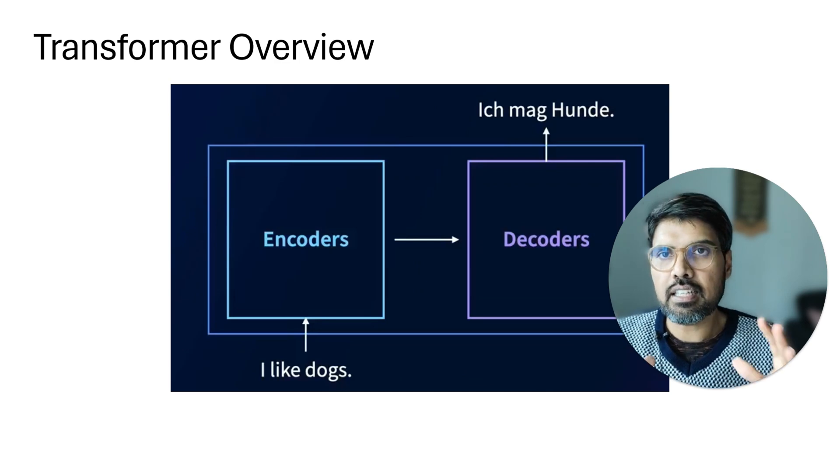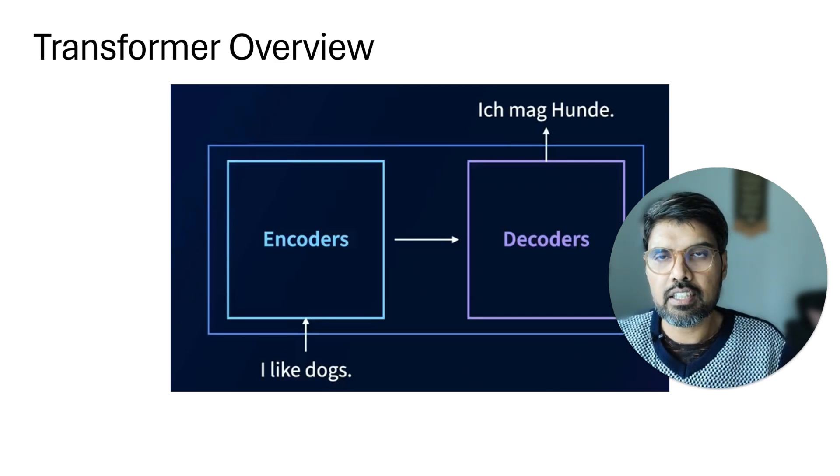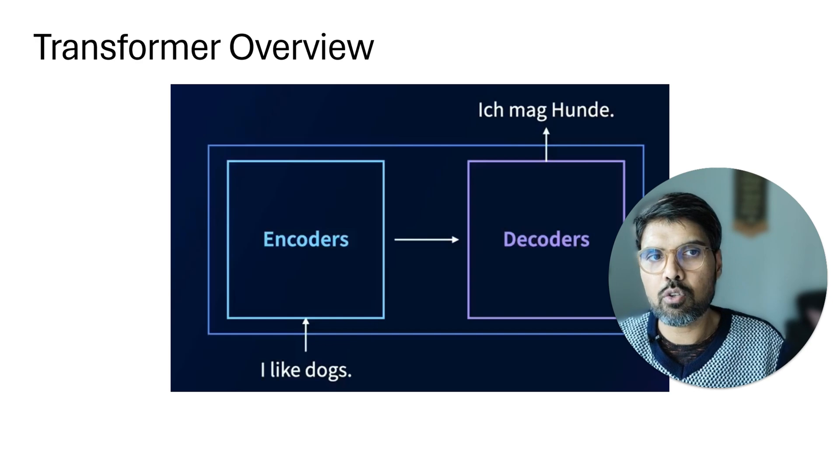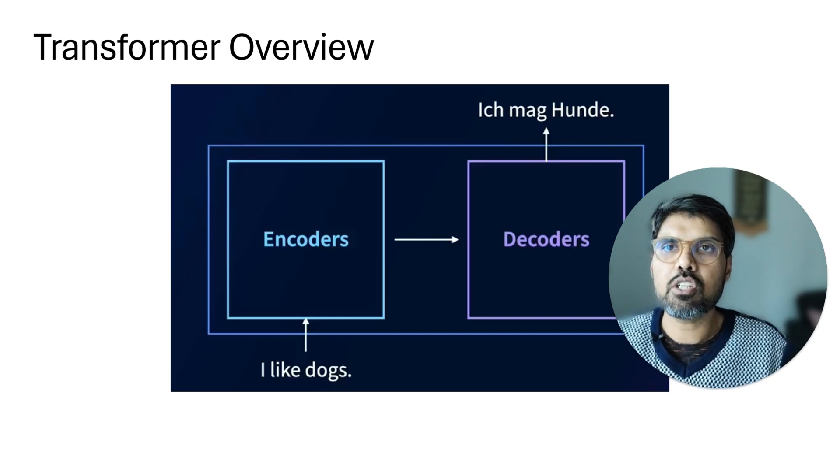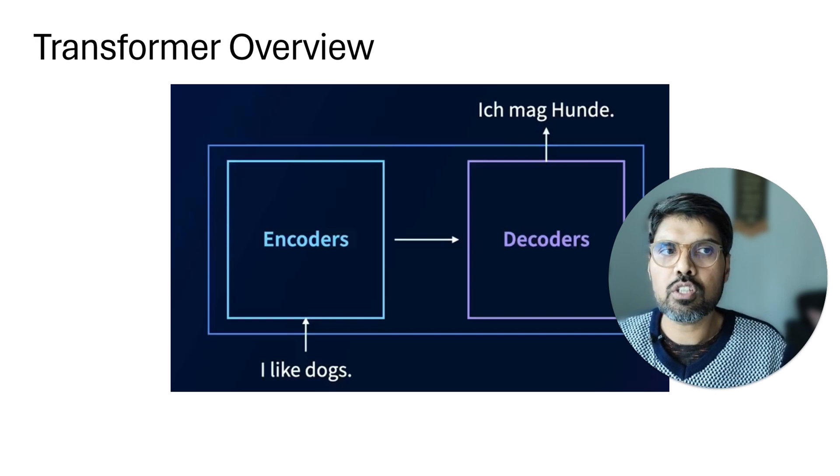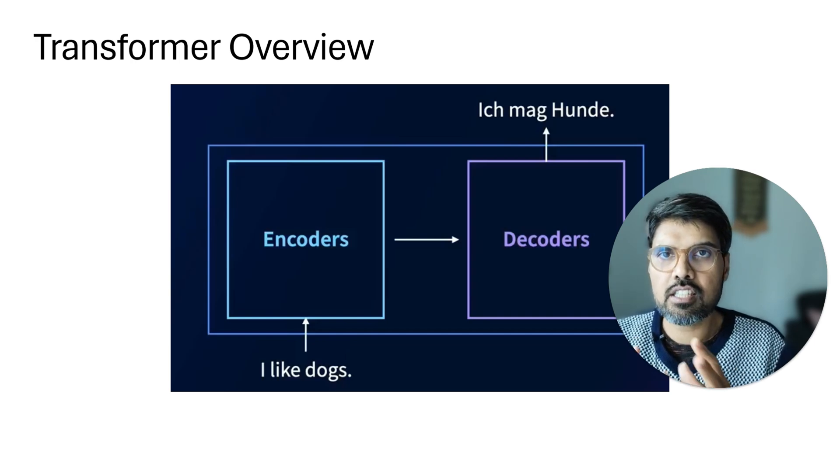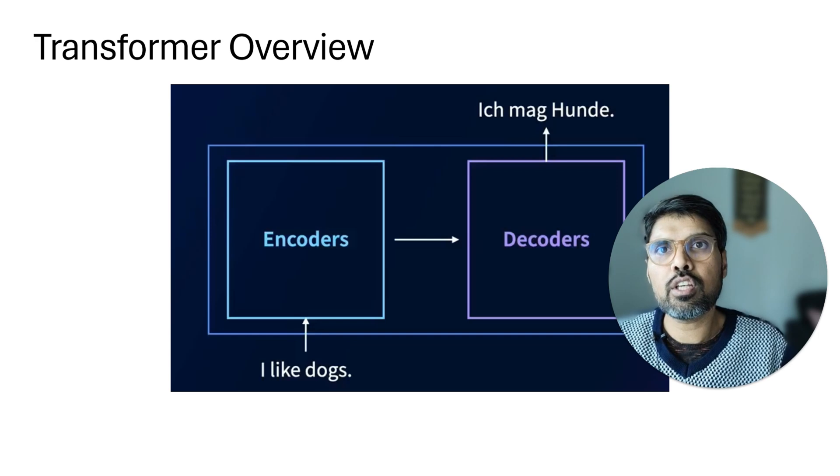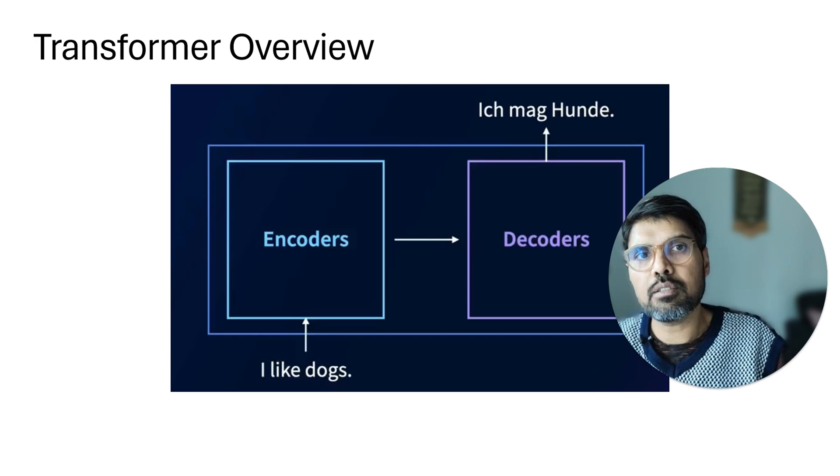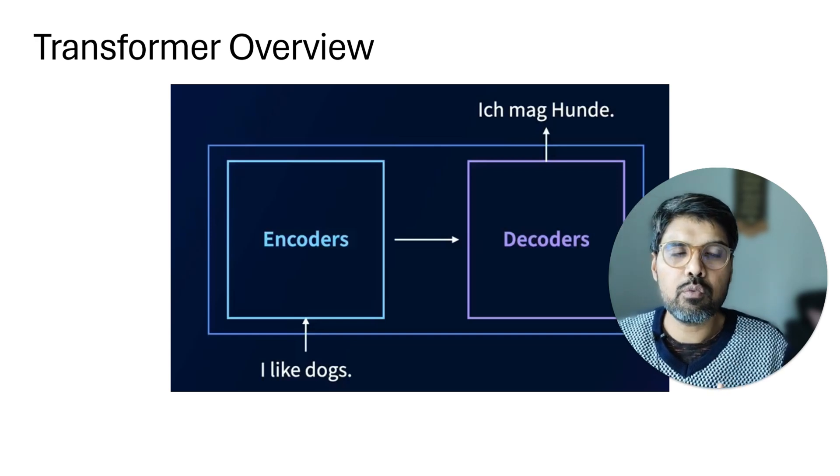This is a simple way of talking about it. The encoder takes a particular line, like 'I like dogs,' and then it's passed to the decoders which translate it into German. This is a very simple demonstration, not going into too much technical detail.